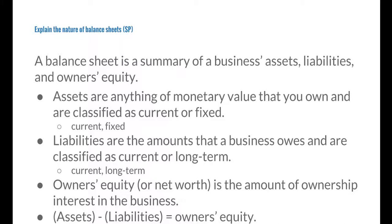Liabilities are the amounts that a business owes and are classified as current or long-term. A current liability is a debt that the business must pay back during the upcoming year. A long-term liability is a debt that is due after 12 months' time, such as a long-term loan. An owner's equity is also known as net worth and is the amount of ownership interest in the business. The difference between assets and liabilities equals the owner's equity.